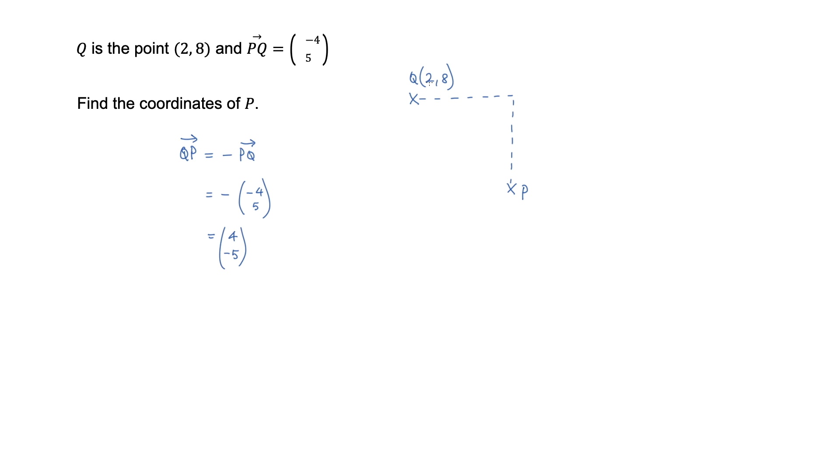So if I'm moving four in the x direction, two plus four is six. And eight, I'm going to subtract five. That will give me three. So the coordinates of point P are (6, 3).